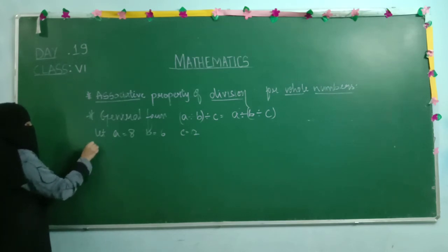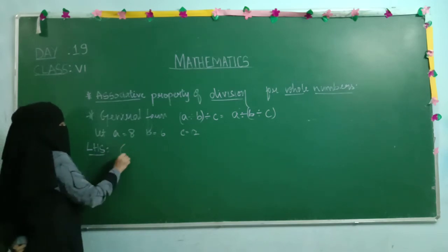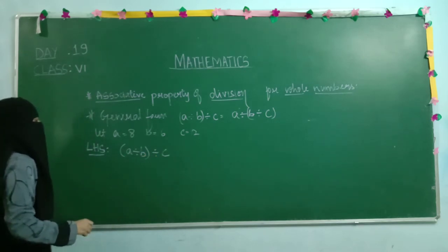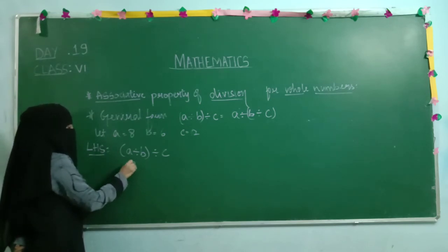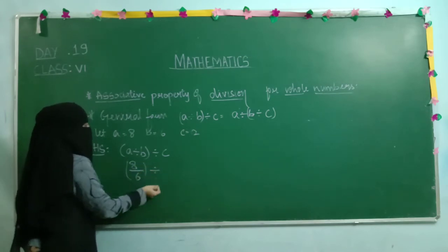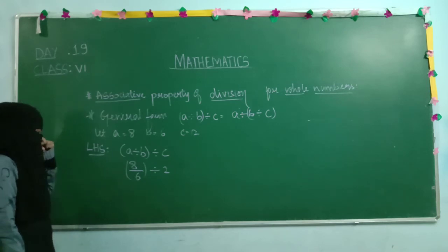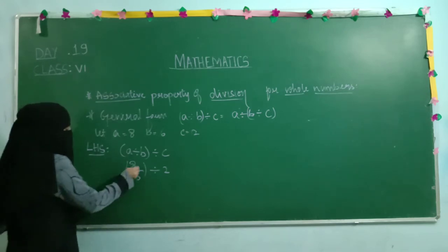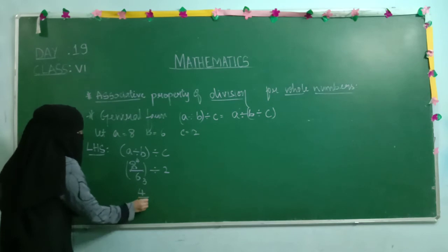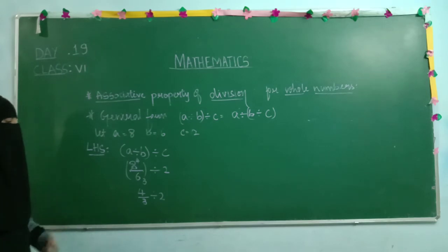Let's begin with LHS: (A divided by B) divided by C. Substituting: (8 divided by 6) divided by 2. We can reduce 8 and 6 by the 2 table — 2 times 4 is 8, 2 times 3 is 6 — giving (4 divided by 3) divided by 2. This is the value of LHS.